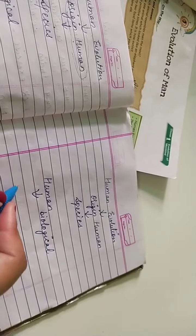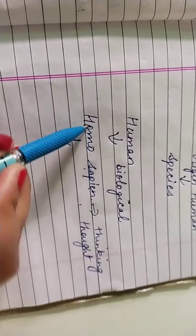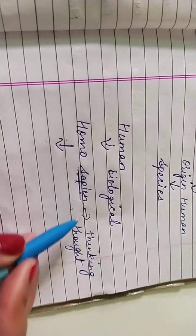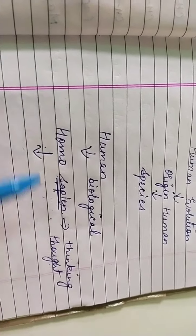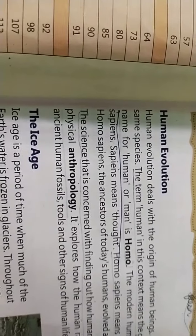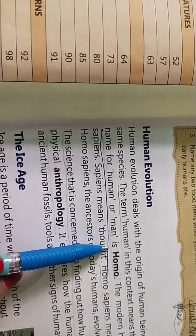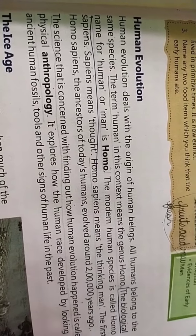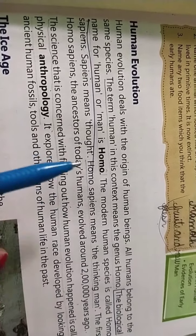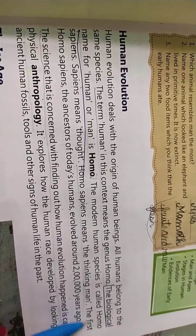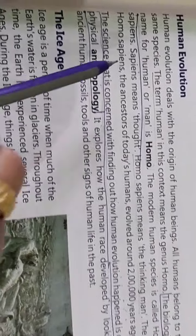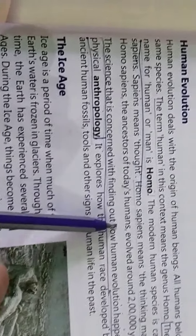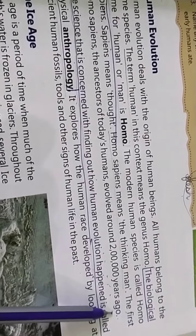The biological name given to the human is Homo. Modern man is given the name Homo sapien. Sapien means thought — a man has the ability to think, which is the reason this name is given. Underline this: the biological name for human is Homo, because they can ask you in brain gain, fill-ups, or true-false. The first Homo sapien, ancestor of today's human, evolved around 200,000 years ago.